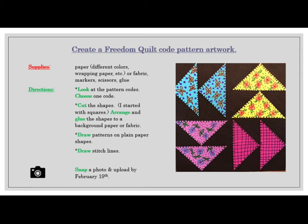Directions: Look at the pattern codes. Choose one code. Cut the shapes. I started with squares. Arrange and glue the shapes to the background paper or fabric. Draw patterns on plain paper shapes. Draw stitch lines.